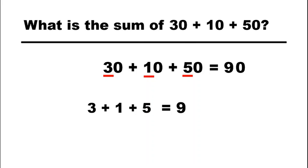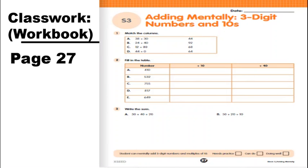Now that you know how to add three-digit numbers by tens and adding numbers with the greatest place value of tens, get your workbook and work on Seat Work Number 3, adding mentally three-digit numbers and tens, on page 27. After answering, please submit it in our Google Classroom Classwork for today's official offline class activity. That would be all for today. God bless.